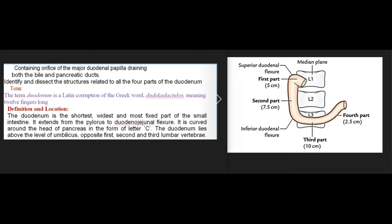The term 'duodenum' is a Latin corruption of the Greek word 'duodecim digiti,' meaning 12 fingers long. The duodenum is the shortest, widest, and most fixed part of the small intestine. It extends from the pylorus to the duodenojejunal flexure and is curved around the head of the pancreas in the form of the letter C.